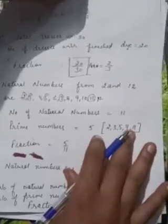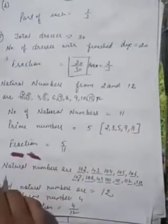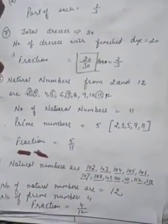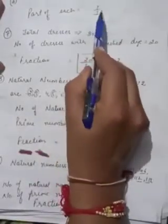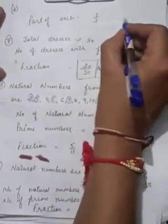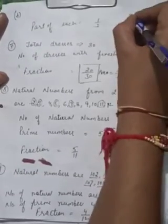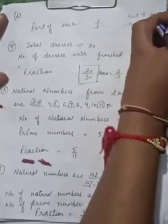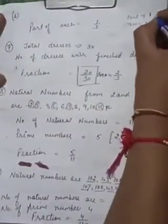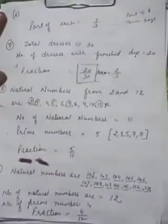So aap kar sakte ho. So aap karne ni yeh puchha kiya ki kitna part sabhi ko aega. Ek bande ko kya part aega. So 1 upon 3. Total kitne hai. 3 boys. So then it is part of 1. 1 upon 3. Okay students.